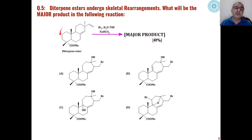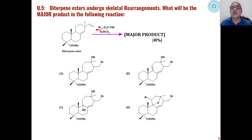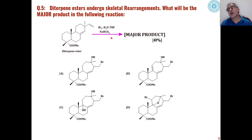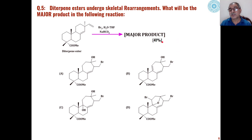The fifth problem involves diterpene esters, which usually undergo skeletal rearrangement. When these diterpene esters are reacted with bromine in the presence of water, THF as a polar solvent, and sodium bicarbonate, which will be the major product? The major product is formed in 41%, and out of the four choices, which one is it?